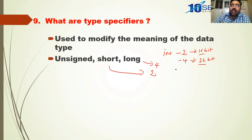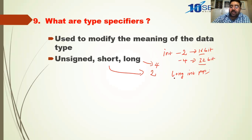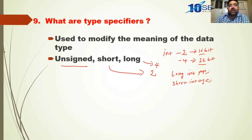In a 16-bit compiler, integer gives 2 bytes. If you want to store the population of a country, 2 bytes is not sufficient — then use long int population. In a 32-bit compiler, integer gives 4 bytes. If you want to store the age of a person — maximum 3 digits — 4 bytes is unnecessary, so use short int age. For unsigned: when you know the data will never be negative, use unsigned.